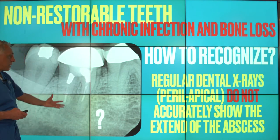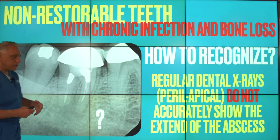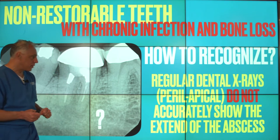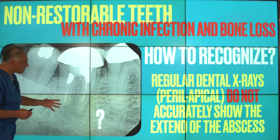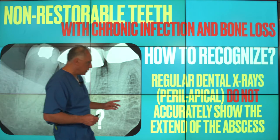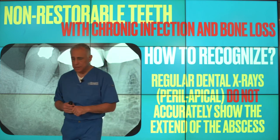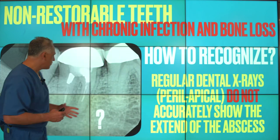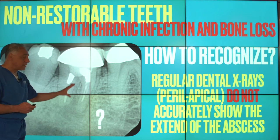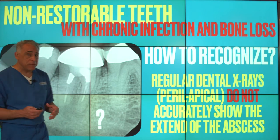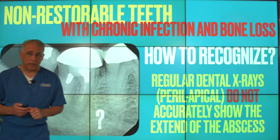These are known as periapical dental x-rays, which are really two-dimensional images. Unfortunately in many cases they may not accurately show the extent of the abscess, particularly if the size of the infection is quite small. So in many cases infection can be missed on a two-dimensional dental x-ray.